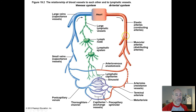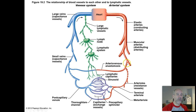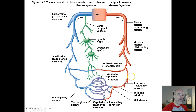Those elastic arteries divide up or branch off into muscular arteries — those are your middle-sized arteries. Those lead to smaller arteries, which eventually bring you to the smallest ones, called arterioles. Those are down in very local tissue areas, getting down to the microscopic level. Then those flow into your capillary beds.